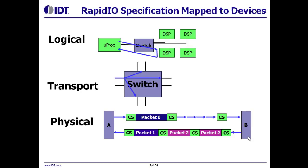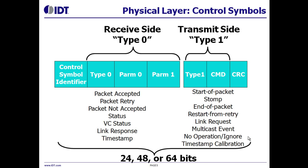The transfer of packets is governed by two quantities: the priority of the packet and the acknowledge ID found in the packet and also carried in control symbols. Control symbols carry two kinds of information. The first is information that the transmit side sends to the receiver directly — things like start of packet, end of packet, or a multicast event control symbol that signals an event has occurred within the RapidIO network. The other kind is information that the receiver sends back to the transmitter: things like packet accepted, packet not accepted, link response, or timestamp.